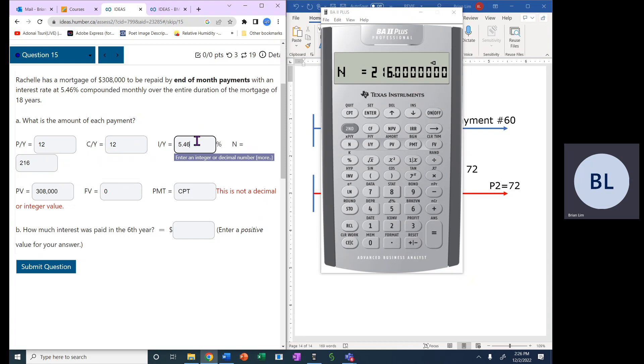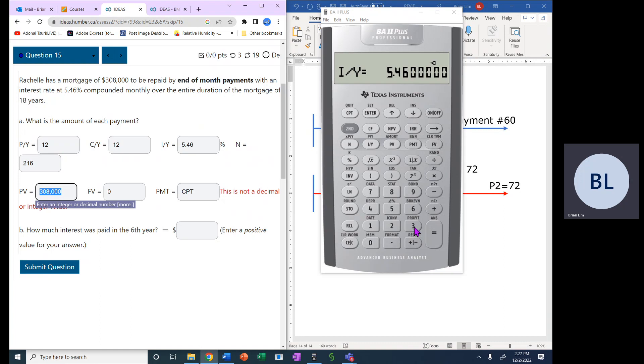All right, the interest rate is 5.46, so let's enter that: 5.46, IY. Present value is the amount of the mortgage, 308,000, so 308,000. That's the present value.